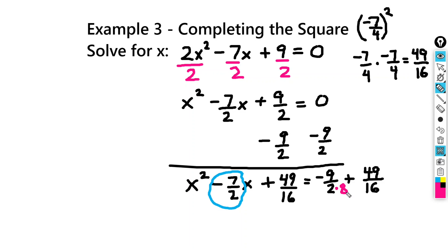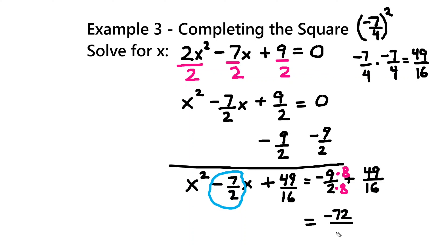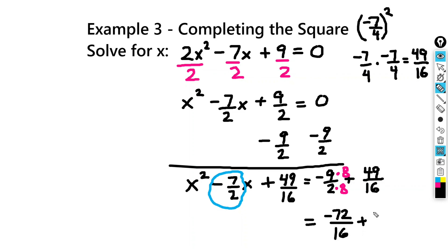So on the right-hand side, I'm going to get negative 72 over 16 plus 49 over 16.